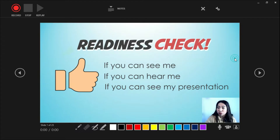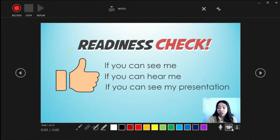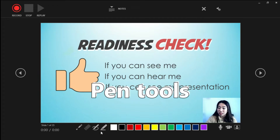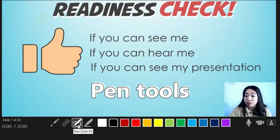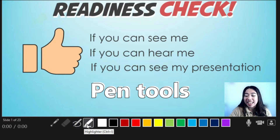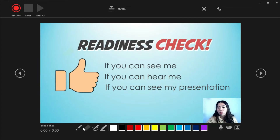Now let's go to some other settings we can see over here. On the lower portion we can see some tools as well. We have a laser pointer, and we also have a pen — if we want to write on our slide it will also be part of the recording. And lastly we also have the highlighter and the eraser. We are free to use these tools and once we use them, they will be included in our recording.